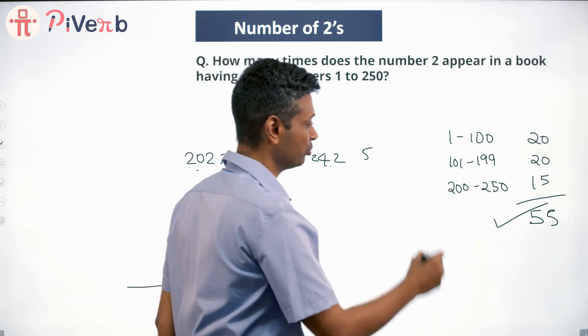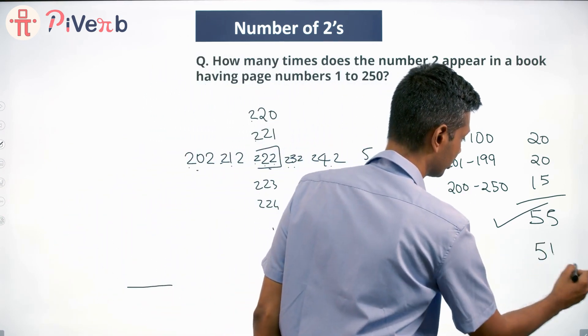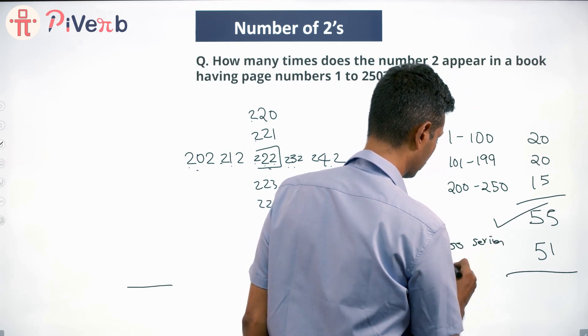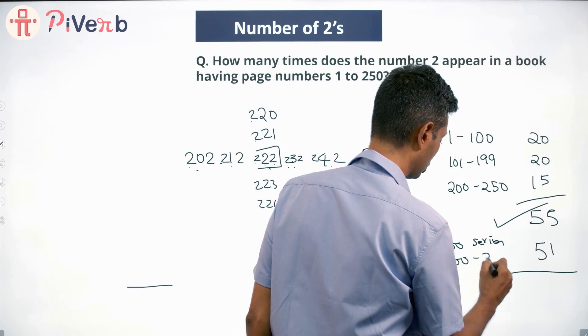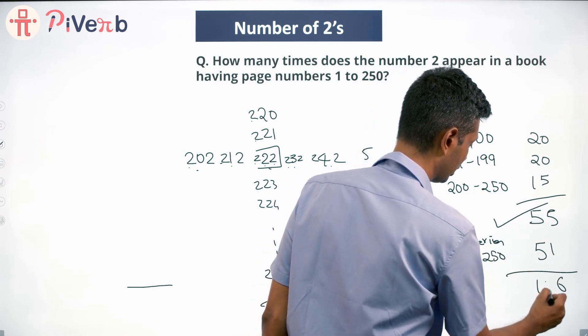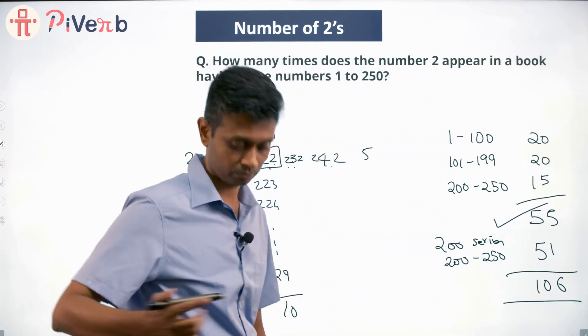So apart from this, there are 51 numbers. This is the 200 series, that is from 200 to 250. So 55 plus 51, 106 times 2 will appear.